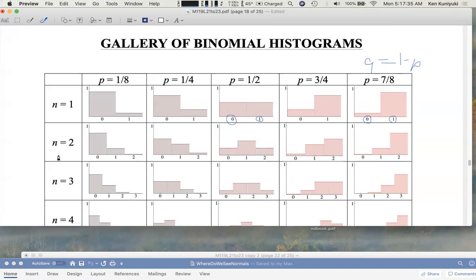Now, if you flip two coins, or if you flip the same coin twice, if it's a fair coin, the probability of one head is one half. The probability of no heads is one quarter. The probability of two heads is one quarter. So we have these binomial histograms that can be used to graph binomial distributions.